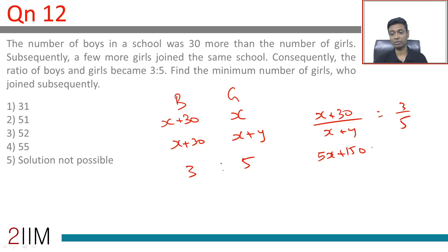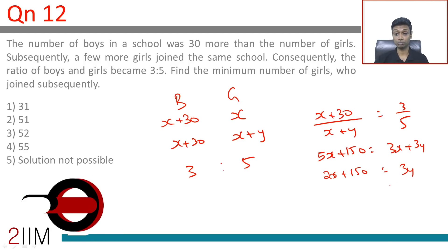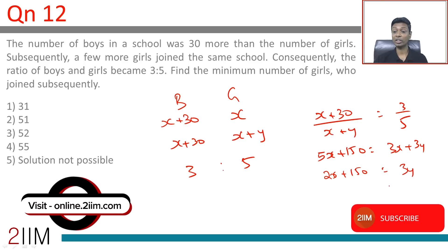5x plus 150 equals 3x plus 3y, so 2x plus 150 equals 3y. If x equals 0, then 3y equals 150, so y equals 50.